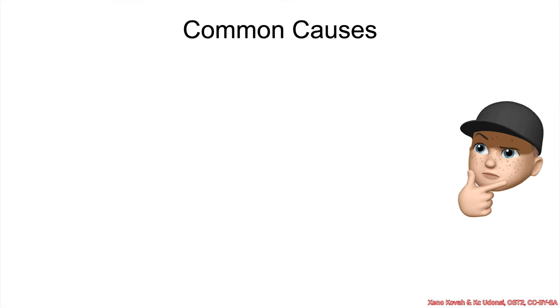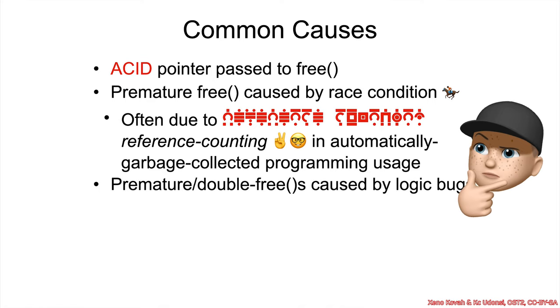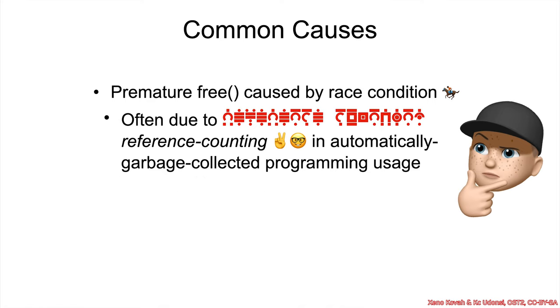There were some common causes that we talked about at the beginning of this section that can cause a use-after-free. Things like passing an invalid pointer to free, premature free caused by race conditions due to reference counting and automatically garbage collected programming usage, and premature or double free caused by logic bugs.